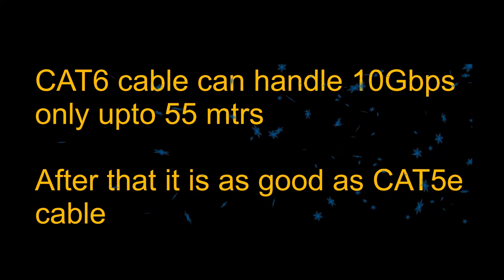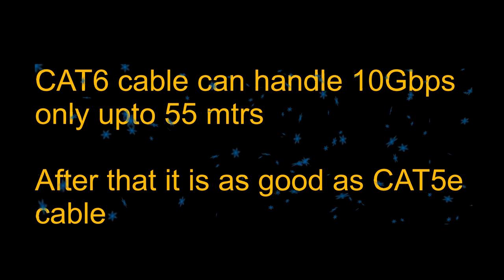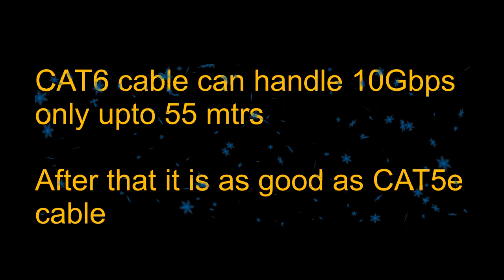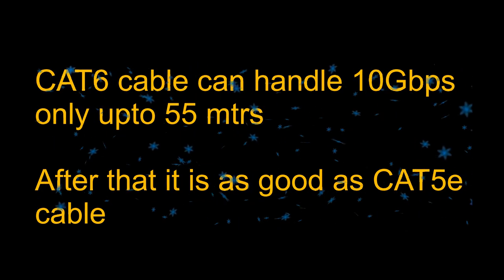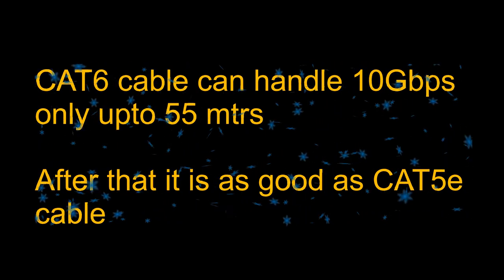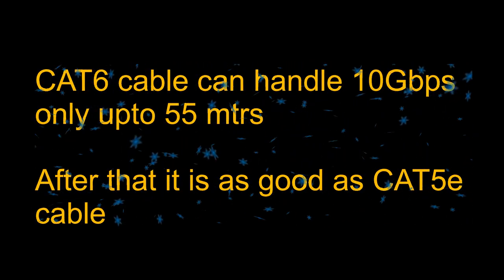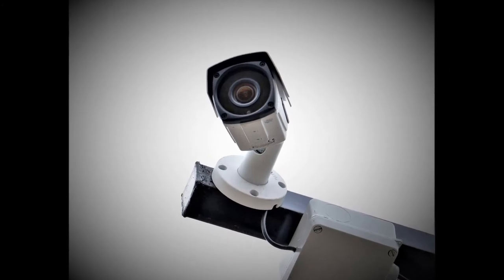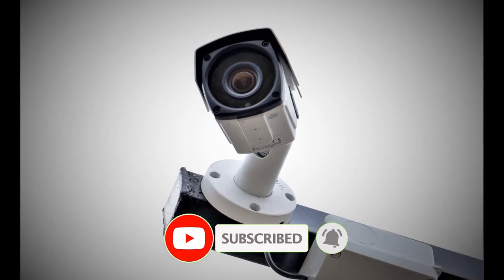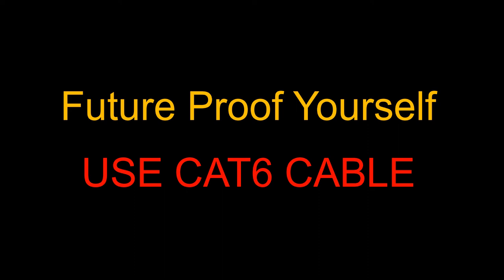On paper, Cat6 cable may be faster than Cat5e cables, but that stands true only if the devices used support the enhanced speed and if all other conditions like cable length are favorable. Having gained knowledge about both types of cables, we can surely use Cat5e cables for our IP CCTV camera installation and save significantly on cable costs. Cat6 cable is a better choice if you want to future-proof yourself where you may be required to handle speeds faster than one gigabit per second.